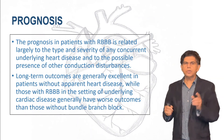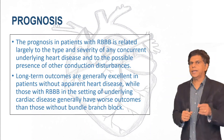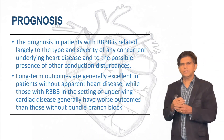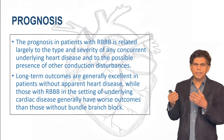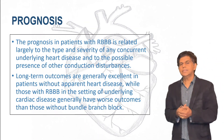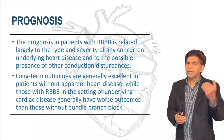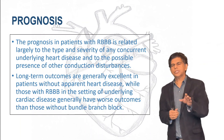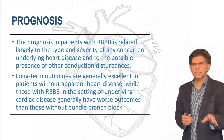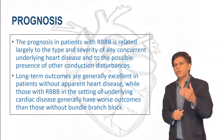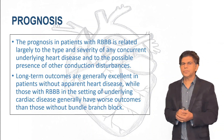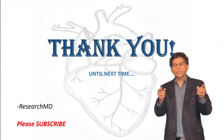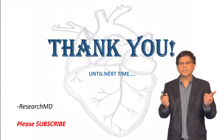Prognosis in patients with right bundle branch block is related largely to the type and severity of any concurrent underlying heart disease. Long-term outcome is generally excellent in patients without apparent heart disease. However, if there is underlying structural heart disease with RBBB, you need to be worried. Always make sure to get an echocardiogram when you see a right bundle branch block — even in a young patient — to check for structural defects. If the patient is older and comes in with symptoms, be very careful, as mortality could be really high. Thank you very much for watching — please click and subscribe.